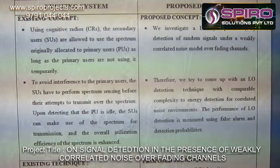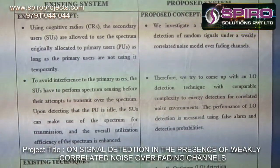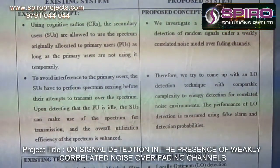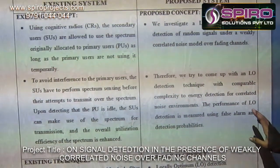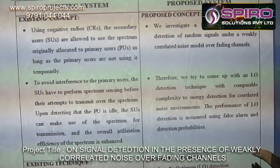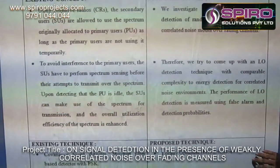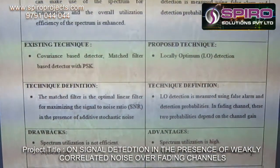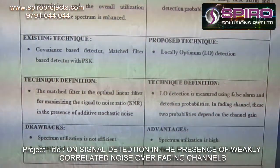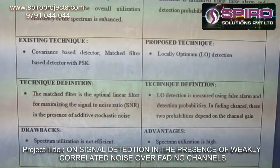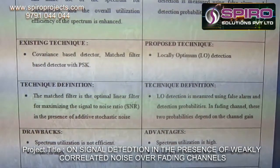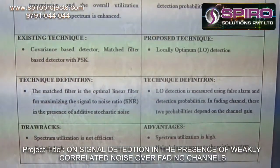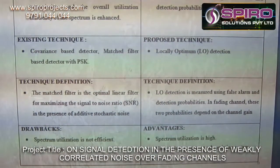This concept is used for detecting the spectrum. It is utilized for best detection technology and signal reduction technology. This technology is used for false alarm probability, and this project has two probabilities: false alarm probability and detection probability.